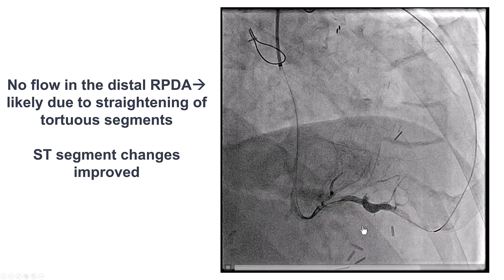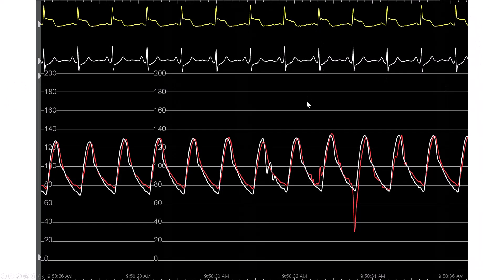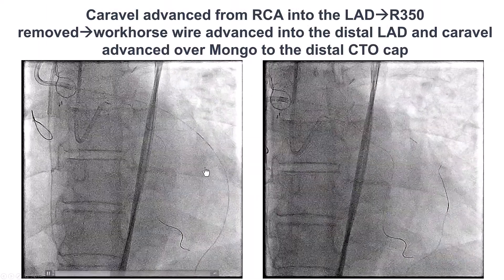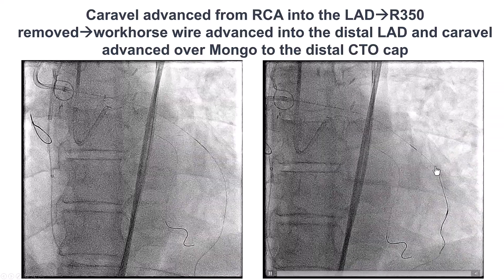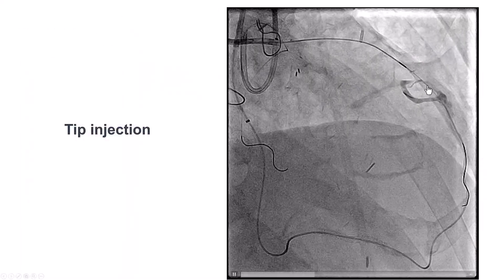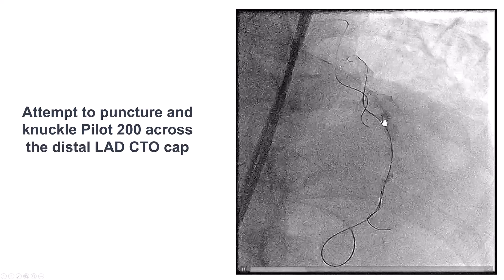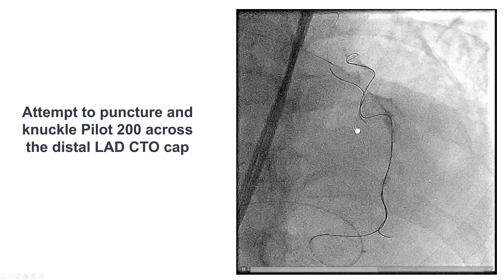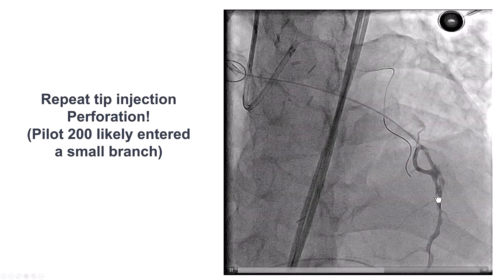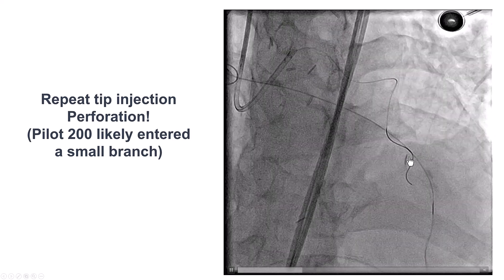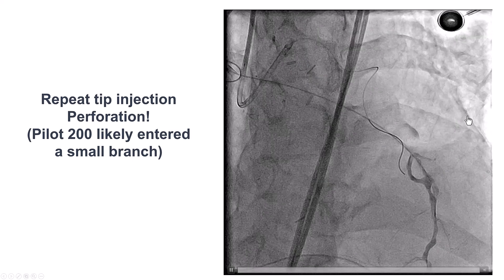Unfortunately, there was still not good flow through the PDA, which we thought might have been due to competitive flow because we had ballooned the saphenous vein graft in the meantime. The patient had some improvement but still continued to have some EKG changes. We then advanced the Caraval into the LAD and tried to do retrograde crossing of the LAD as originally planned. We did a tip injection. There was a problem with bifurcation of the distal cap filling a small branch, likely diagonal. We tried with the PILOT 200 to get through the distal cap, which was challenging. The guide wire seemed to advance outside the course of the vessel, and with repeat tip injection we saw staining and a perforation at the distal cap. We had probably entered a small branch and now had a small perforation — a big concern in patients with previous coronary bypass because it can lead to loculated effusions.